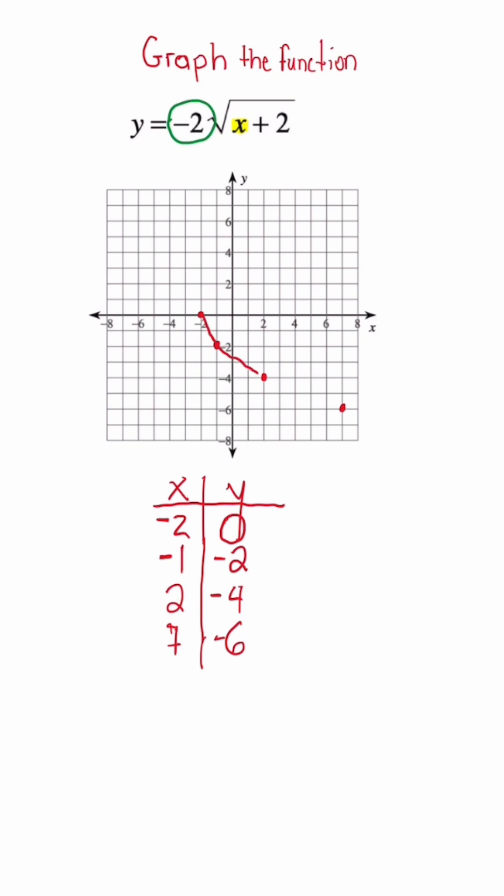And because we had an A coefficient, this is when you should expect your graph to either have a compression or a stretch. If they ask us to identify the domain, we would say that X is greater than or equal to negative 2. And if we're concerned with the range, we know the range is going to be Y is less than or equal to 0.